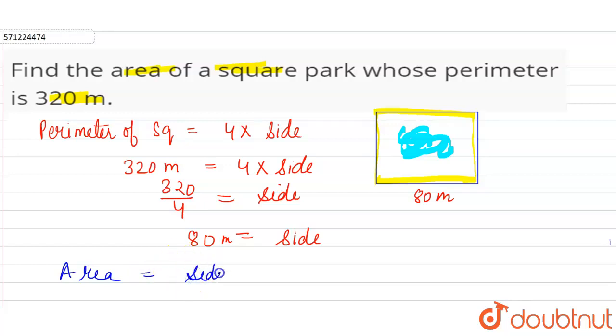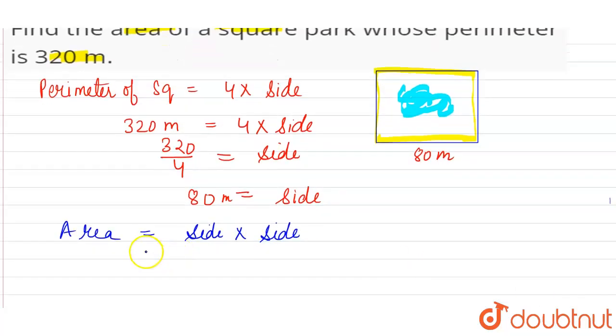This is the formula for calculating area of a square. So side we have calculated is 80 meters, so 80 meters times 80 meters. You just have to calculate 8 times 8, which is 64, and two zeros after that.